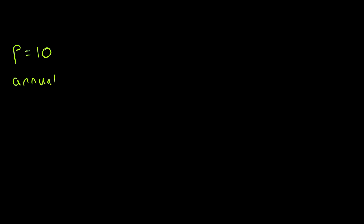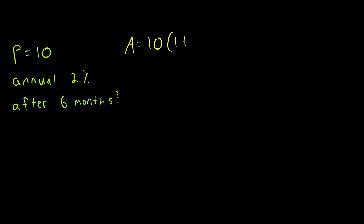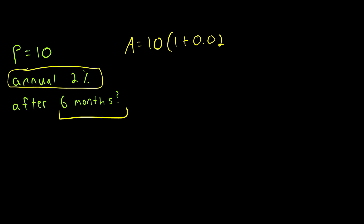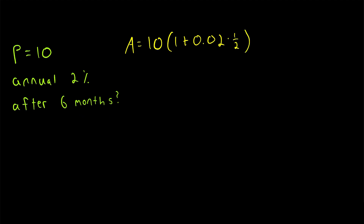We can also handle decimal time values. Say 10 is invested in an account earning annual simple interest at a rate of 2%. How much is in the account after six months? The amount equals the principal P, which is 10, multiplied by 1 plus the rate 0.02, multiplied by time. Six months have passed, and since the rate is annual we measure in years, so six months is one half of a year. That gives 10 times 1.01, which equals 10.1. And that's how we calculate simple interest.